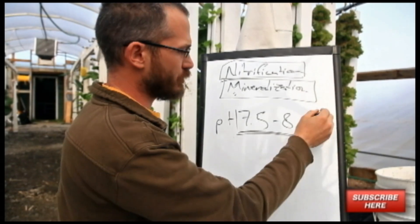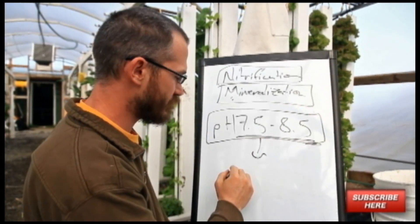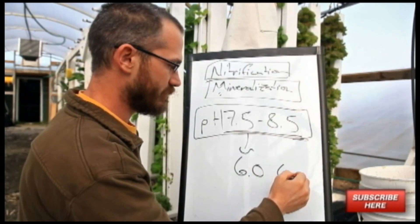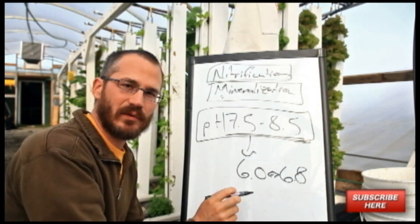So this is kind of the traditional pH range that people tell you to run your system at. I say run your pH range somewhere between 6 and 6.8 or 7, somewhere in that range. This is going to be kind of the ideal range.